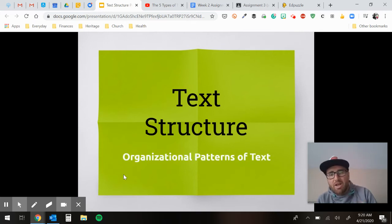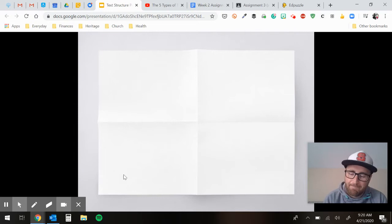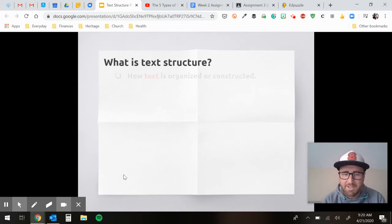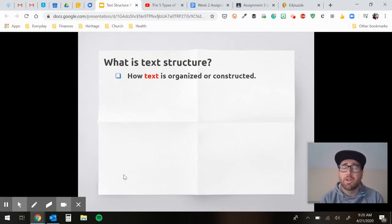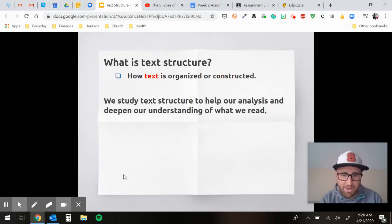It's the pattern of text, how it's organized—beginning, middle, end, cause and effect, chronological, and we'll go through all those here in a second. So what is text structure? It's how text is organized or constructed, how it's put together, how it's built, how the author wants you to understand information.